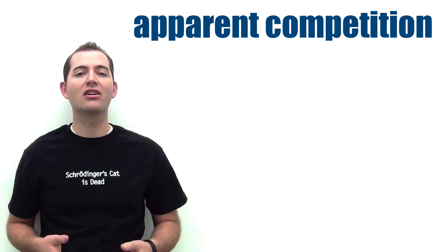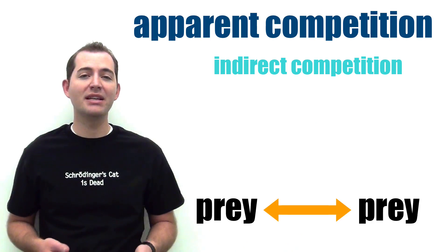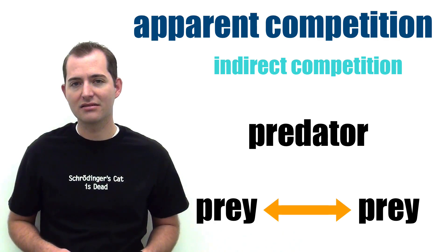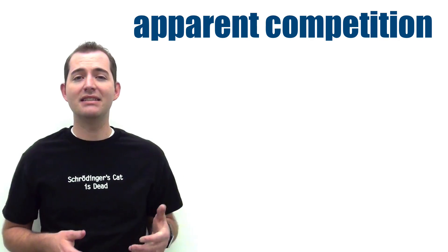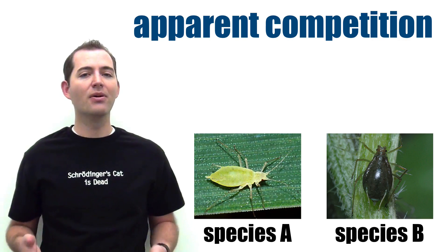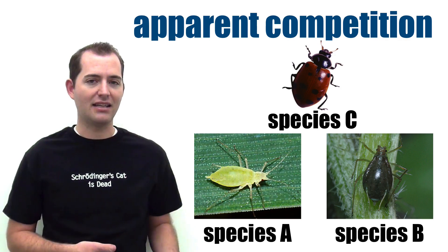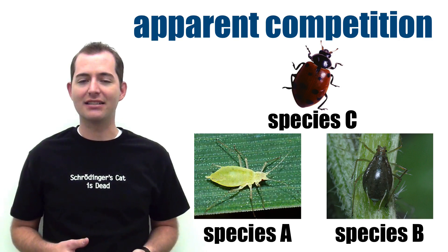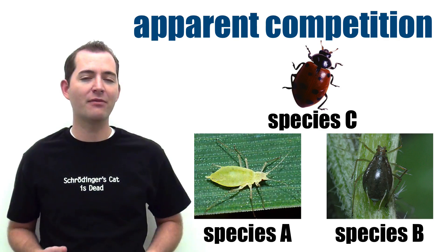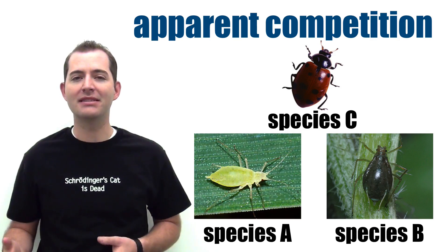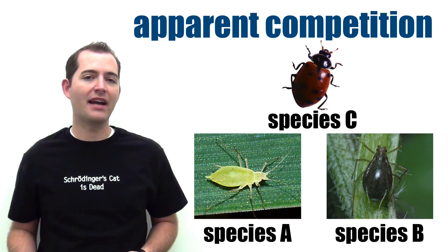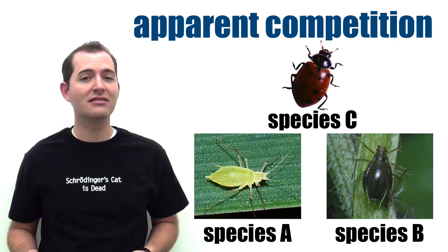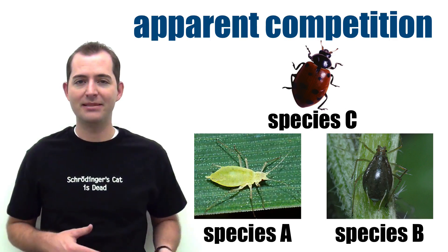Apparent competition occurs indirectly between species that are preyed upon by the same predator. For example, species A and species B are both eaten by species C. If the number of organisms in species A increases, this improves the survivability of the predator species C, which negatively affects species B by increasing the number of predators available to hunt species B.